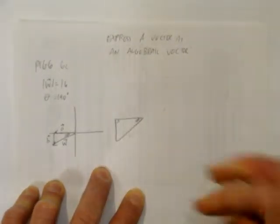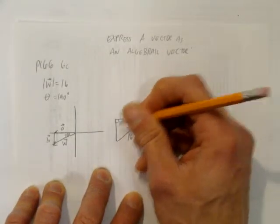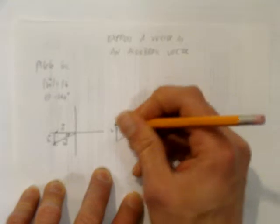We're told it's 16. So we want to solve for the magnitude of the a vector and the magnitude of the b vector.